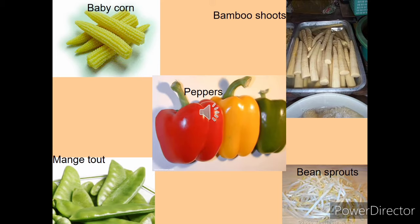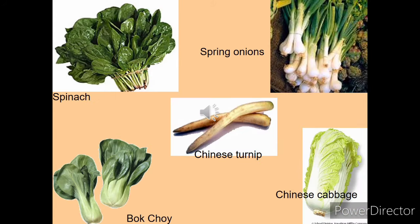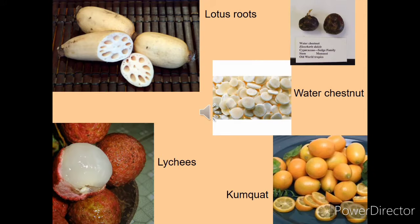Bean sprout and mangetout are used for making different types of noodles and soups — for example, baby corn soup. Spinach, spring onion, Chinese turnip, bok choy and Chinese cabbage are also common. Chinese food mainly depends on their cutting style — the way they cut the vegetables. Lotus root, water chestnut, lychees and kumquat are all dry fruits found in abundance in western China.